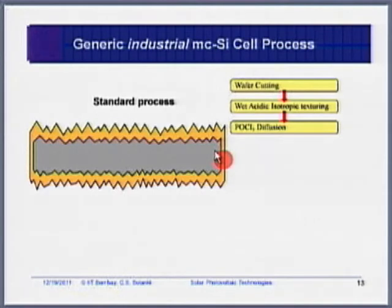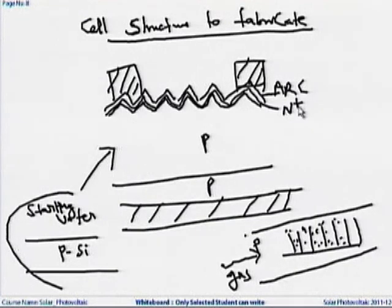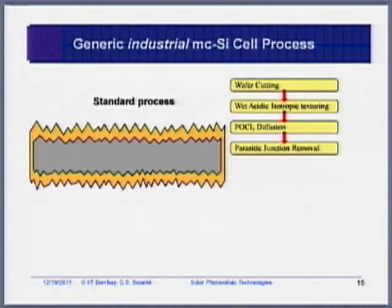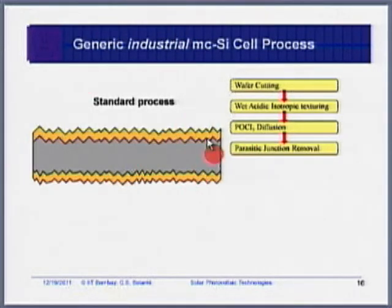But that is not what we want — we want the N-plus layer (heavily doped N layer) only at the front surface, not at the back. That is one problem industry must overcome. Because the emitter goes everywhere including the edges, it shunts everything. So one thing people do is cut the edges to isolate and remove the parasitic junction. In industry, you need to make 2000–3000 wafers per hour, so you have to cut that many wafers.